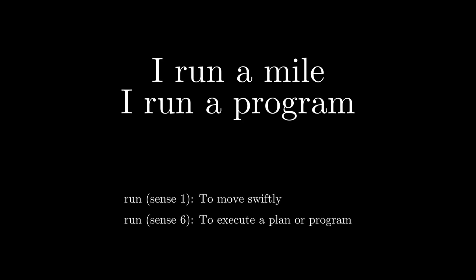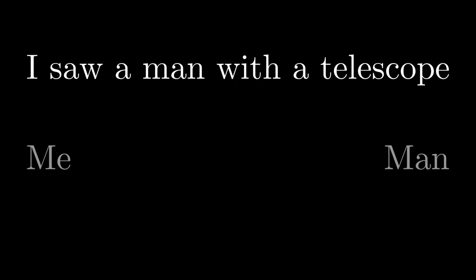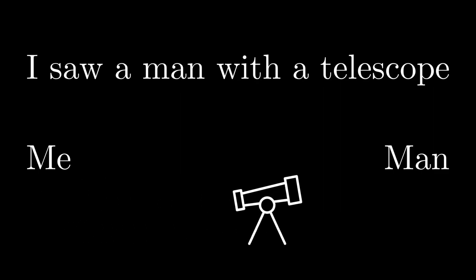The features of Lojban include phonetic spelling, basing the grammar on predicate logic, and making the language have no morphological or syntactic ambiguities. For example, consider 'I run a mile' versus 'I run a program.' The word 'run' has different senses here — the first is physical, while the second is computational. But in Lojban, a word only has one sense. Another example: 'I saw a man with a telescope' is ambiguous because we don't know whether I used a telescope to see a man, or the man I saw had a telescope with him.